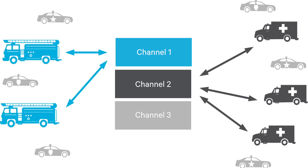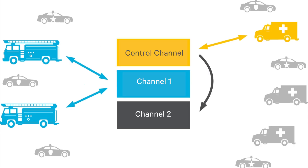So that's the basic difference between conventional and trunking networks. In conventional systems, users manually control the allocation of channels by selecting from a knob, whereas in trunking systems, a computer at the center of the network is responsible for this.